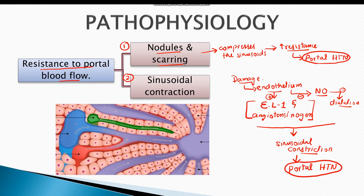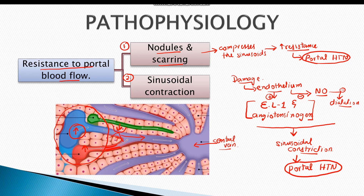Here we can see a portal triad and the sinusoids carrying blood to the central vein. Once nodules are formed, they exert pressure on the sinusoids, resulting in decreased blood flow. There is also contraction of sinusoids which narrows their lumen, resulting in increased pressure in the portal veins.